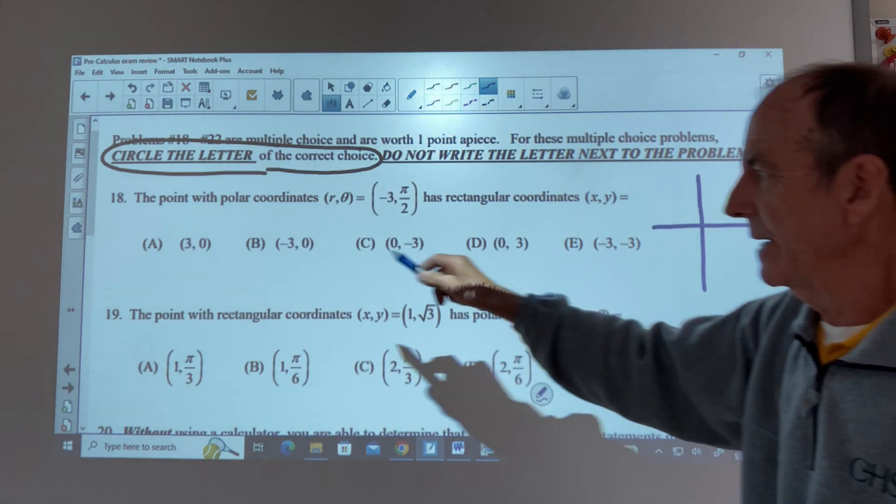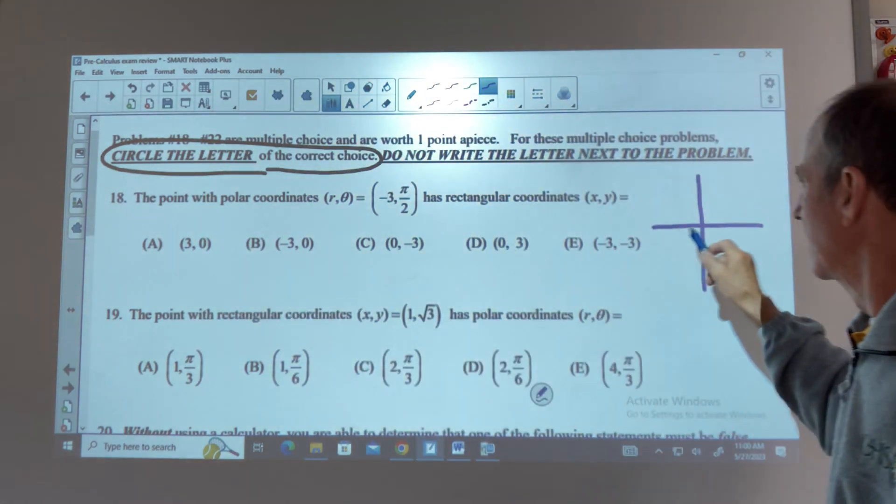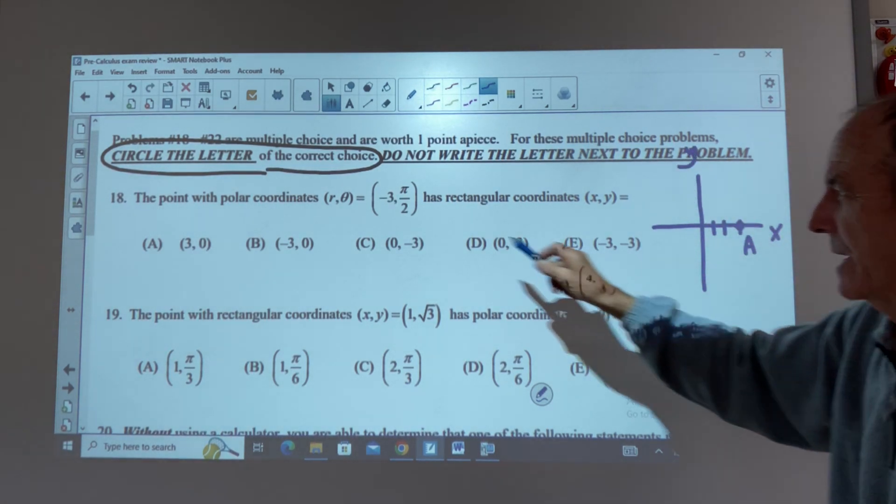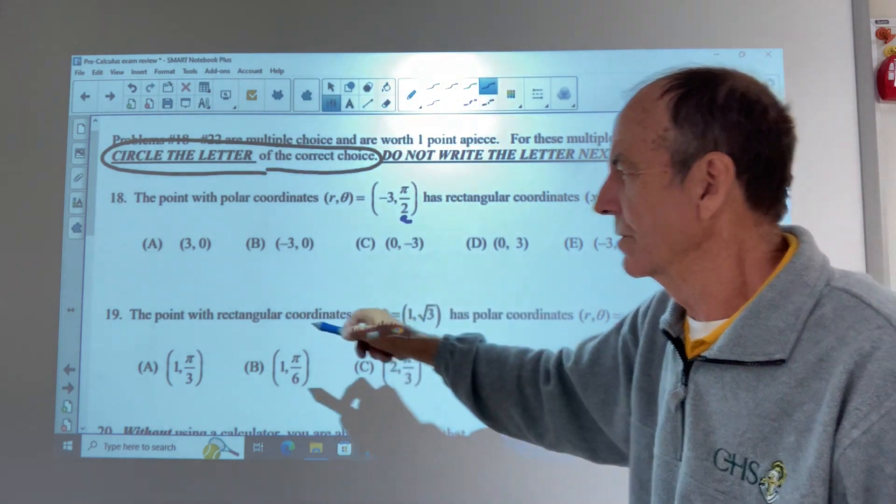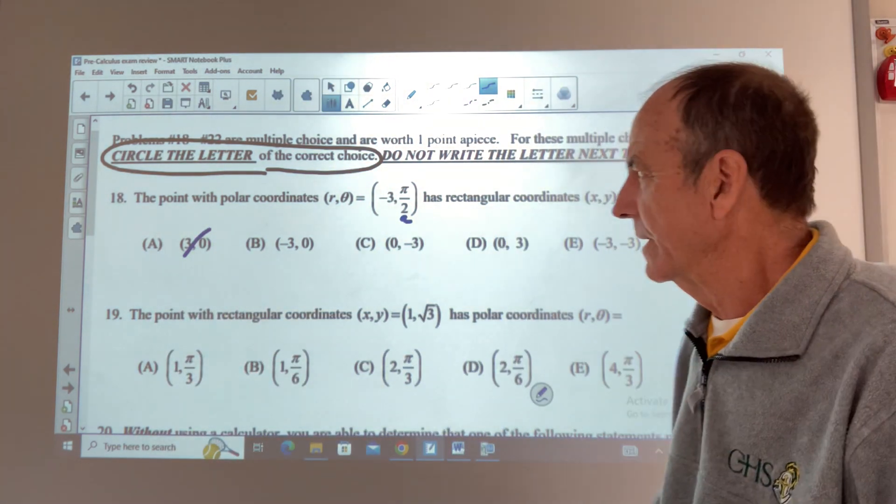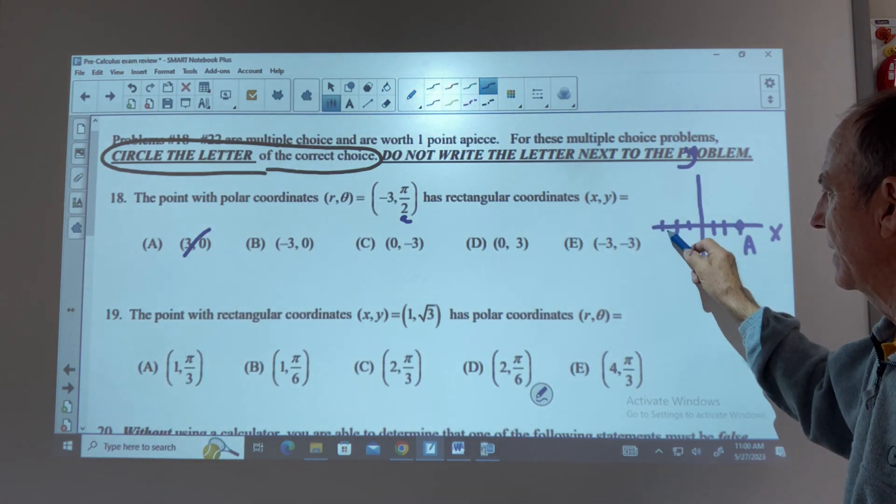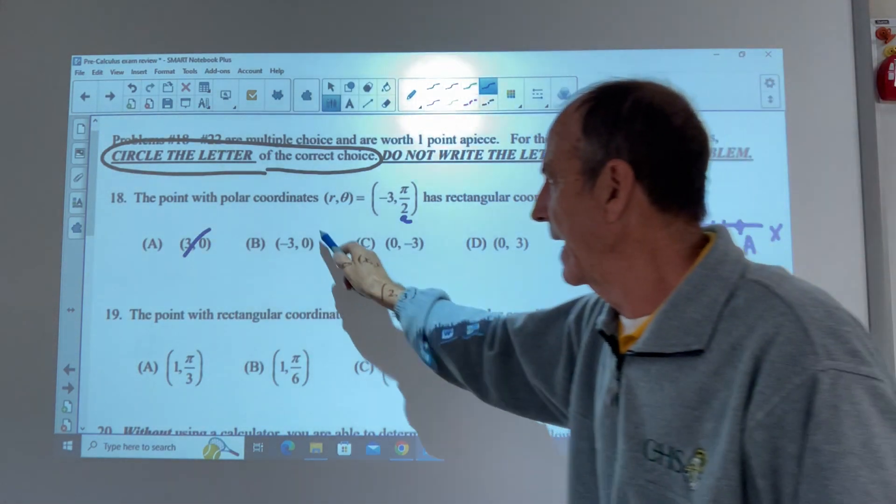So A is 3, 0. This is point A in x and y. And that's probably not going to be the pi over 2, so we can sort of eliminate that. Likewise, B is negative 3, 0. And that's over here. This is point B. We can probably eliminate that.